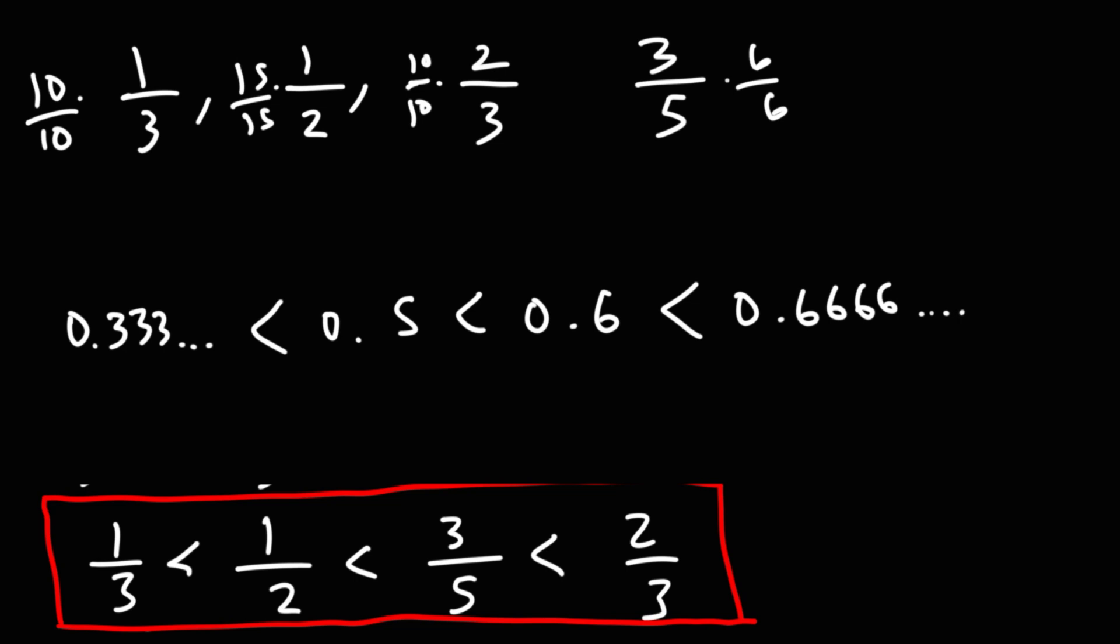So we could see we have the right answer. So that's how you can order fractions from least to greatest. The key is to get common denominators, and then you could rank them based on the value of the numerators of each fraction.